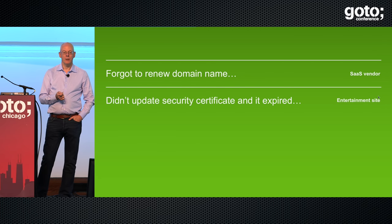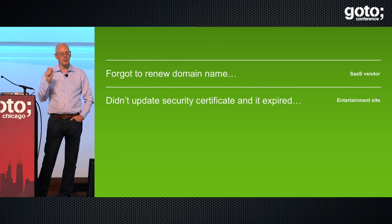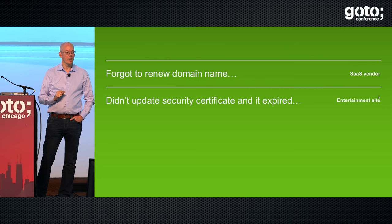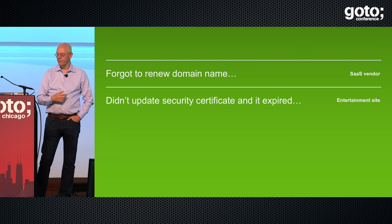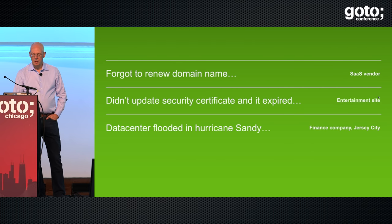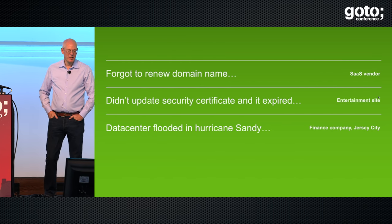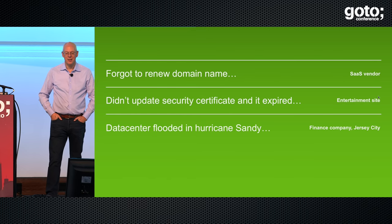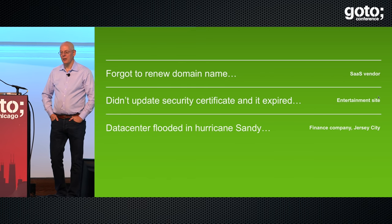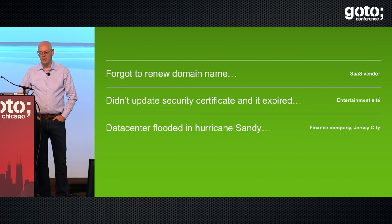We also built a tool at Netflix — part of Security Monkey — that looked at all the keys it could find, checked their expiry dates, and started sending alerts screaming that something needed to be fixed soon. You can build monitoring into your system to find all of those keys. Another real failure: I have a friend who works in New York and had a bad day when an entire data center flooded. Underwater computers don't work very well.